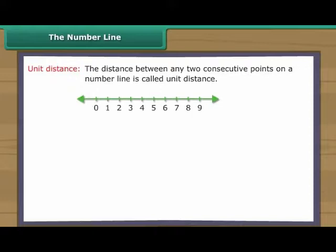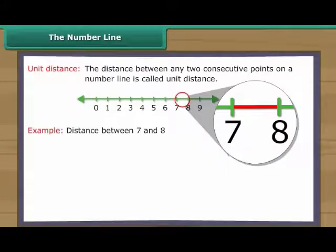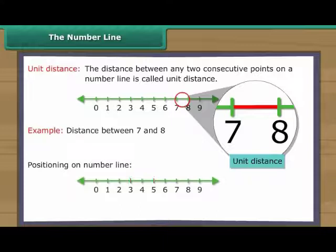The distance between any two consecutive points on a number line is called unit distance. Out of two whole numbers, the greater number comes on the right of the other number on the number line.